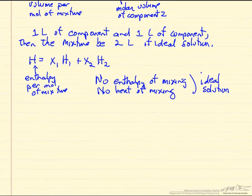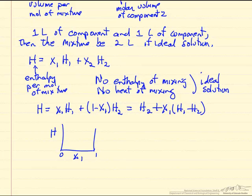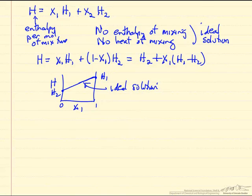So this means I could write enthalpy for the mixture as x1 H1, plus substituting for the mole fraction of component 2 in terms of component 1, we'd have H2 plus x1 (H1 minus H2). So this is a straight line. This says enthalpy of the mixture versus the mole fraction of component 1 from 0 to 1. Here's pure component 2 enthalpy. Here's pure component 1. Ideal solution is just a straight line, because no heat of mixing, no enthalpy of mixing.